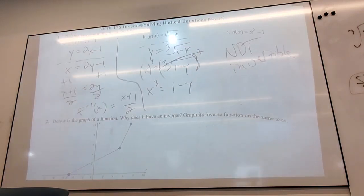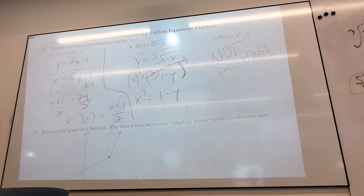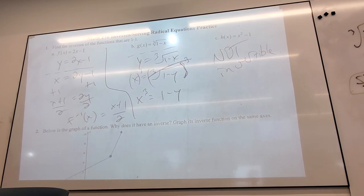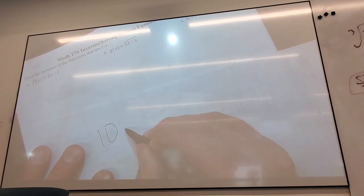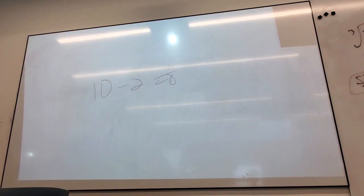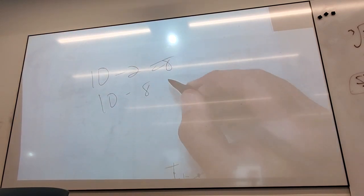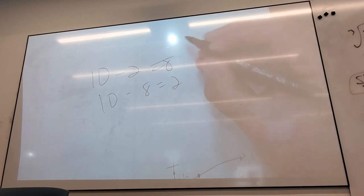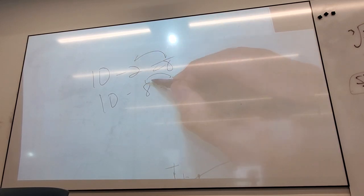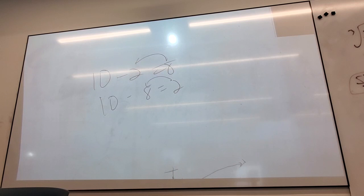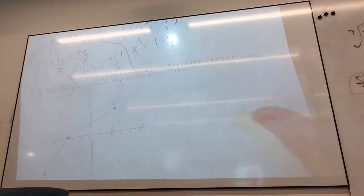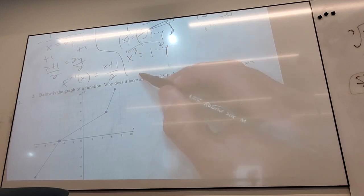Let me show you something cool. What's 10 minus 2? Eight. What's 10 minus 8? Two. See how these can switch? That works for every number ever. Variables are just numbers I don't know yet — they should act like any other number. So a very quick way to solve for y when you have something like y equals 1 minus x cubed? Switch these. Done.